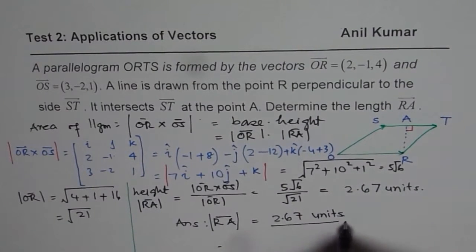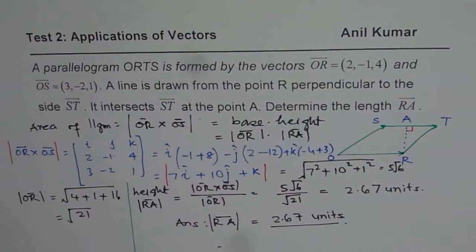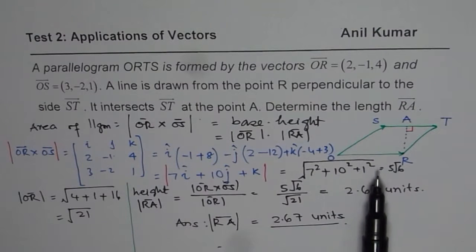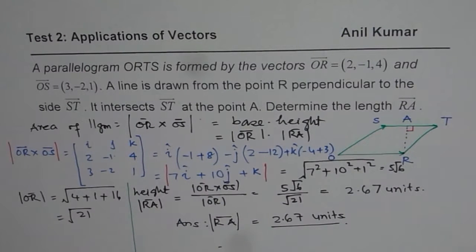So that is how you could solve this question. So follow the steps, find the area using cross product, find the area using base times height, and then find height by equating the two areas. So that is how you should do it.